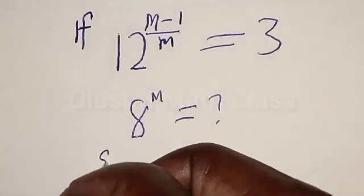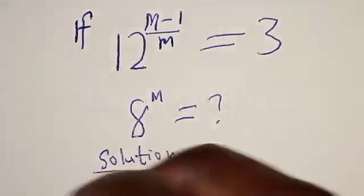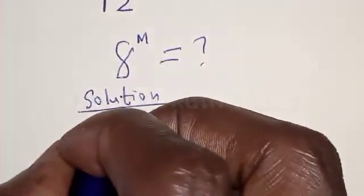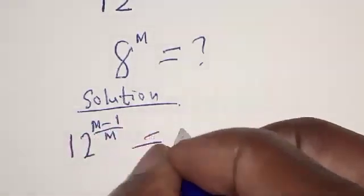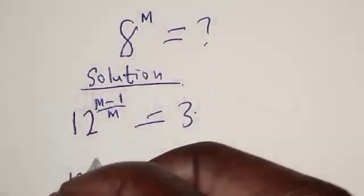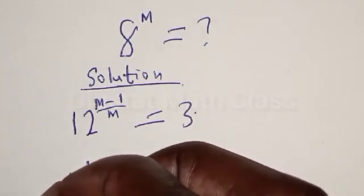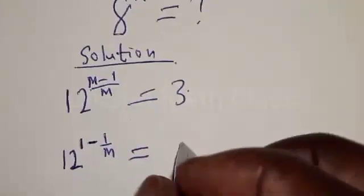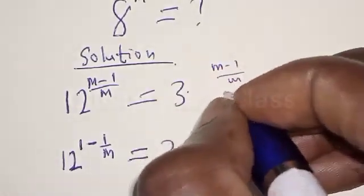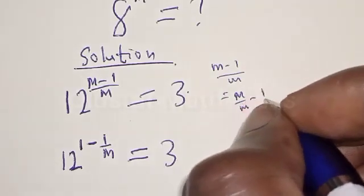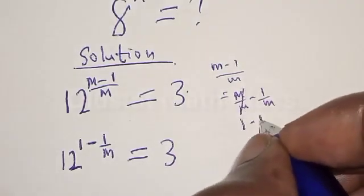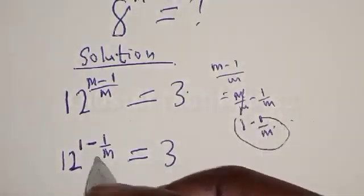Solution. We have 12 raised to power m minus 1 divided by m equal to 3. This can be expressed as 12 raised to power 1 minus 1 over m equal to 3. That is, m minus 1 divided by m is the same as m divided by m minus 1 divided by m, so this gives us 1 minus 1 divided by m. That is how we get this exponent.